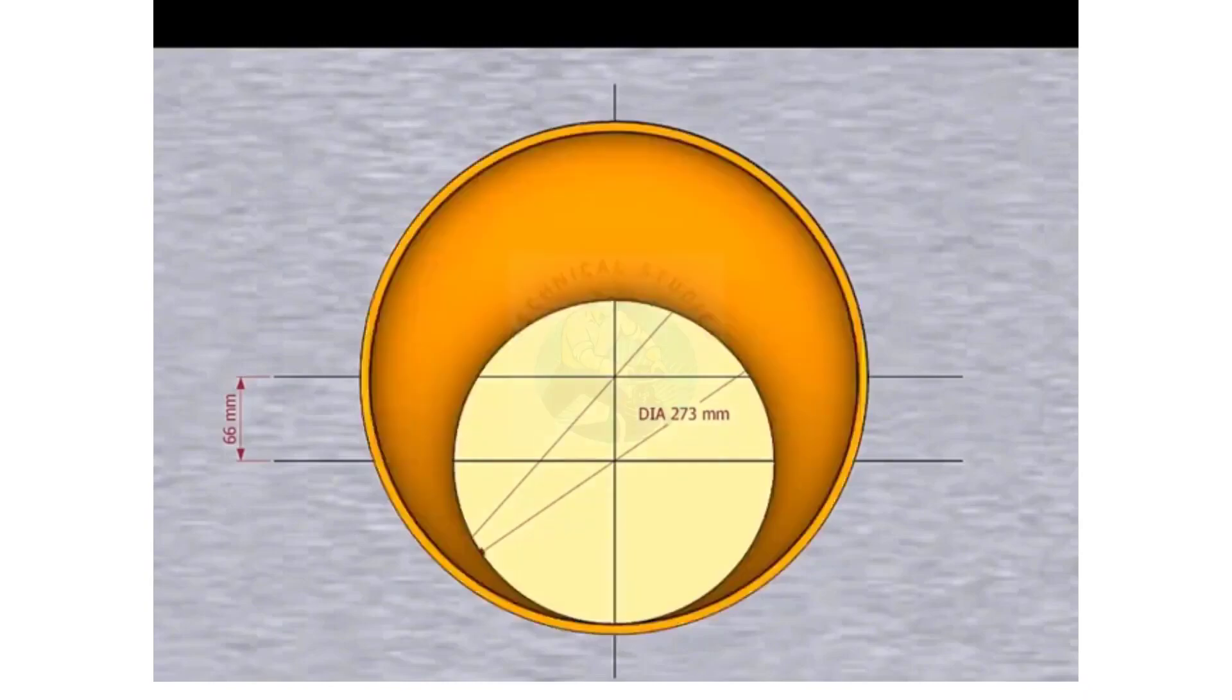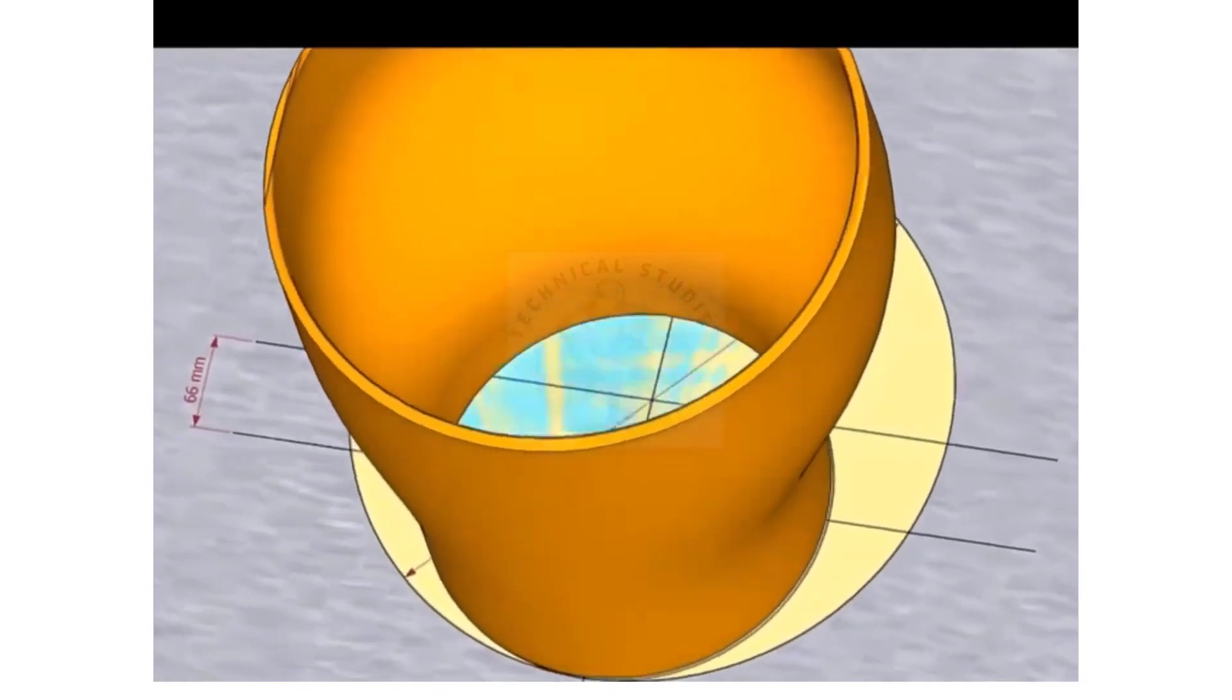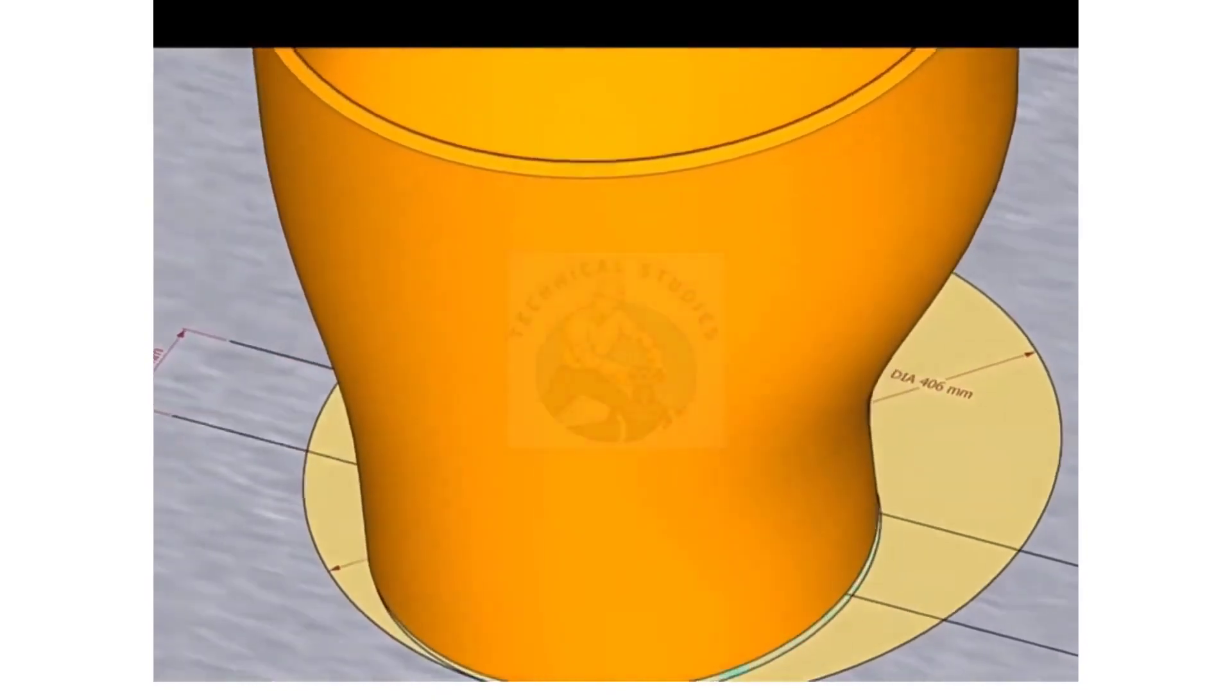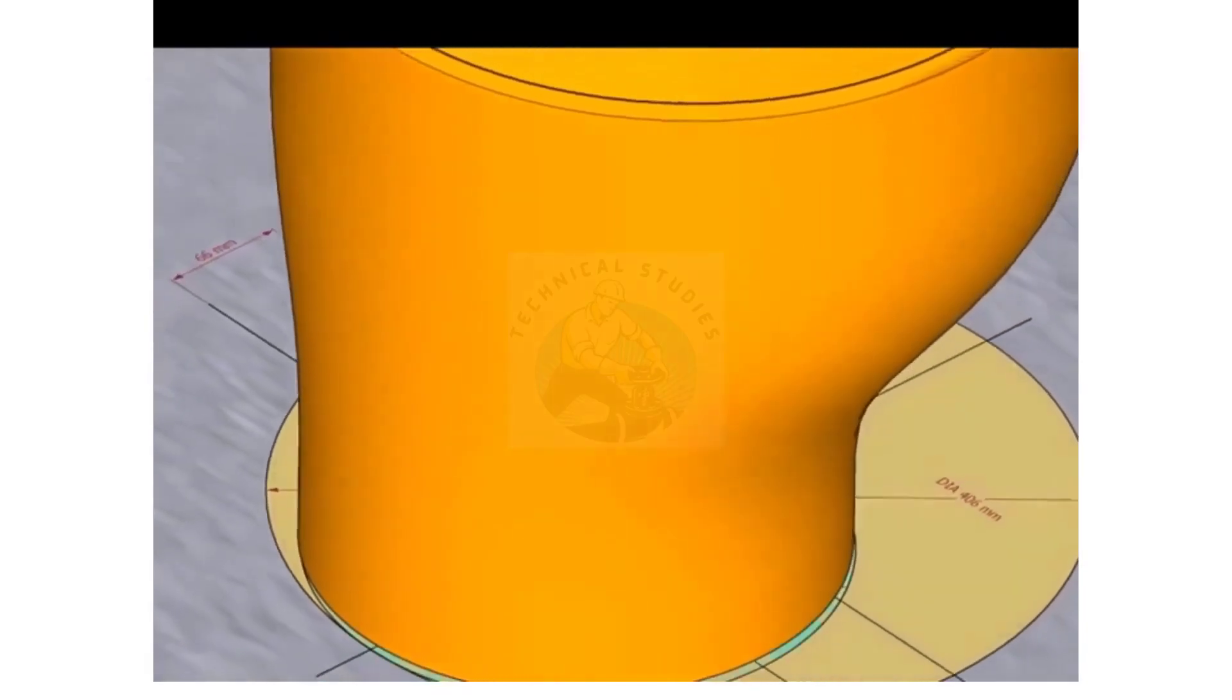Place the reducer on the layout, facing the small end down. Inspect carefully if the reducer sits on the circle correctly.